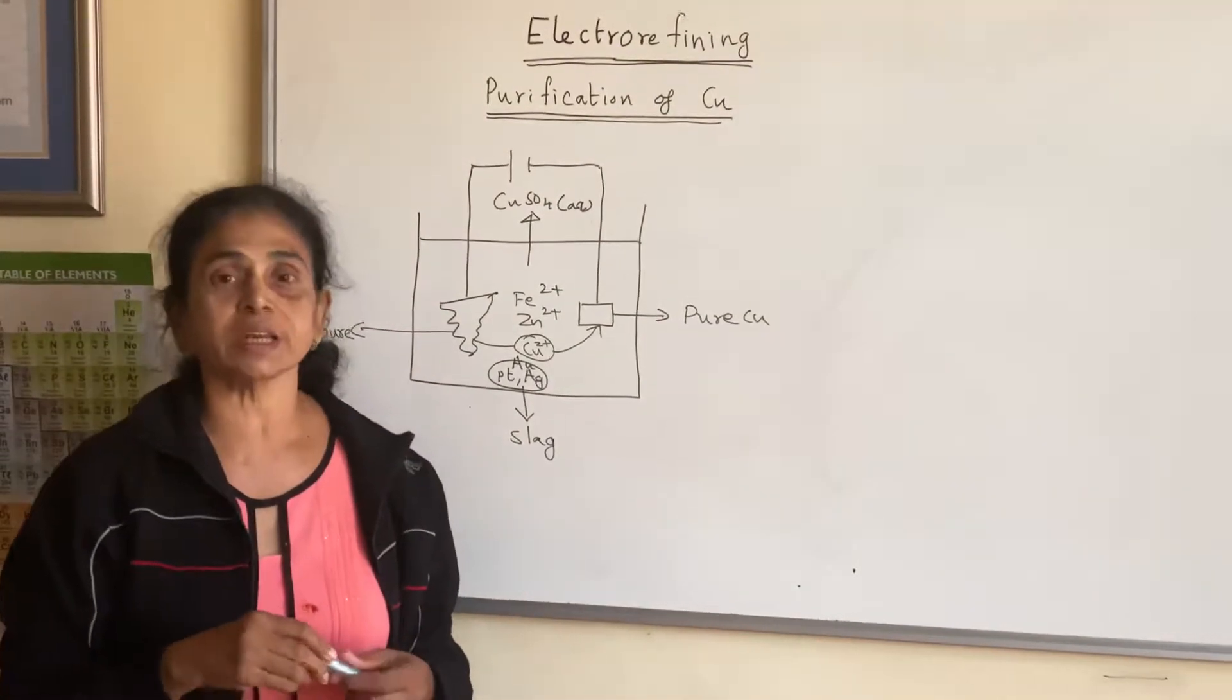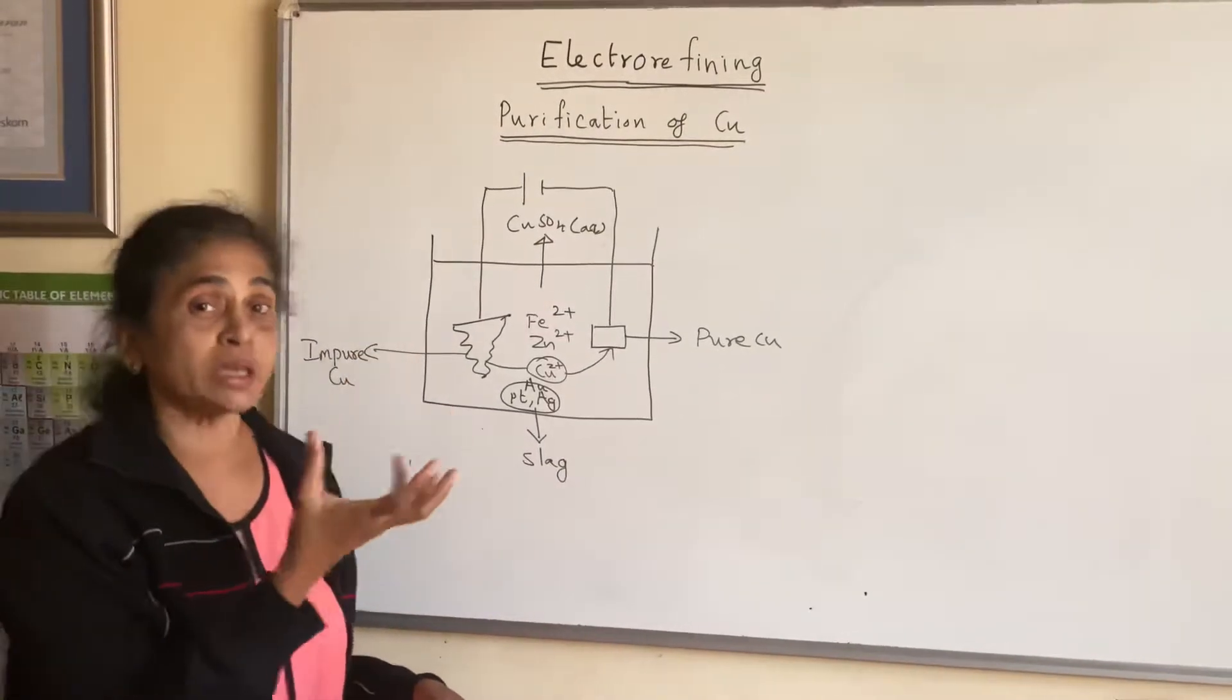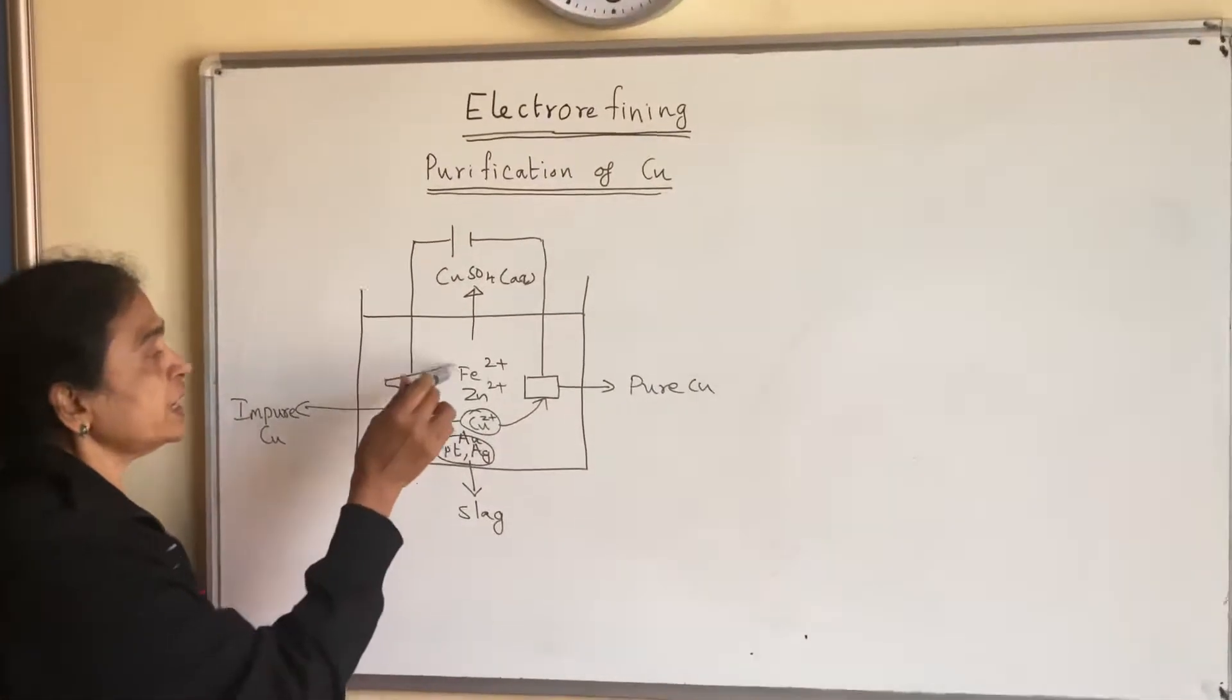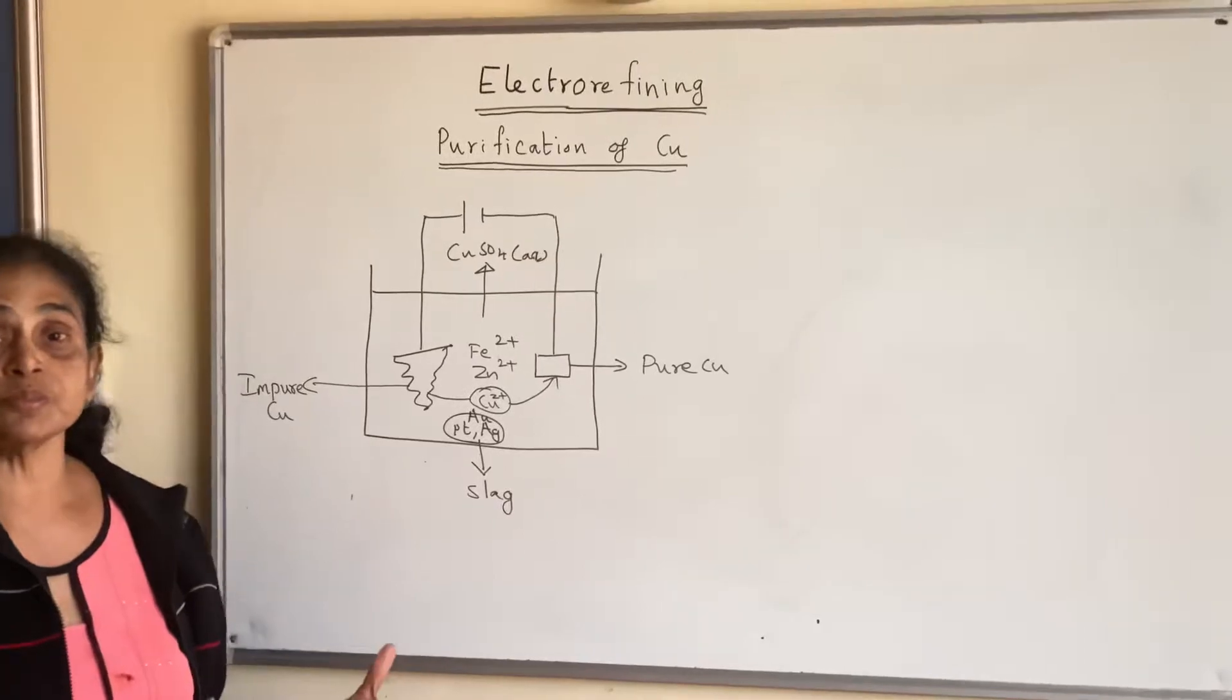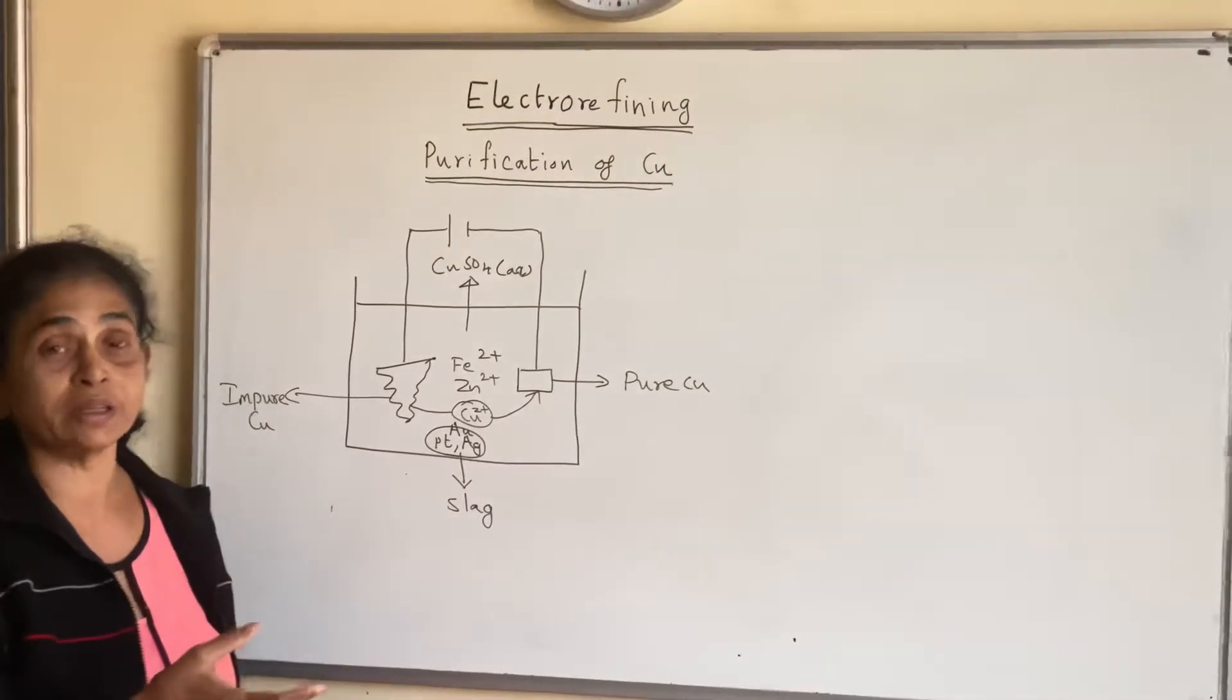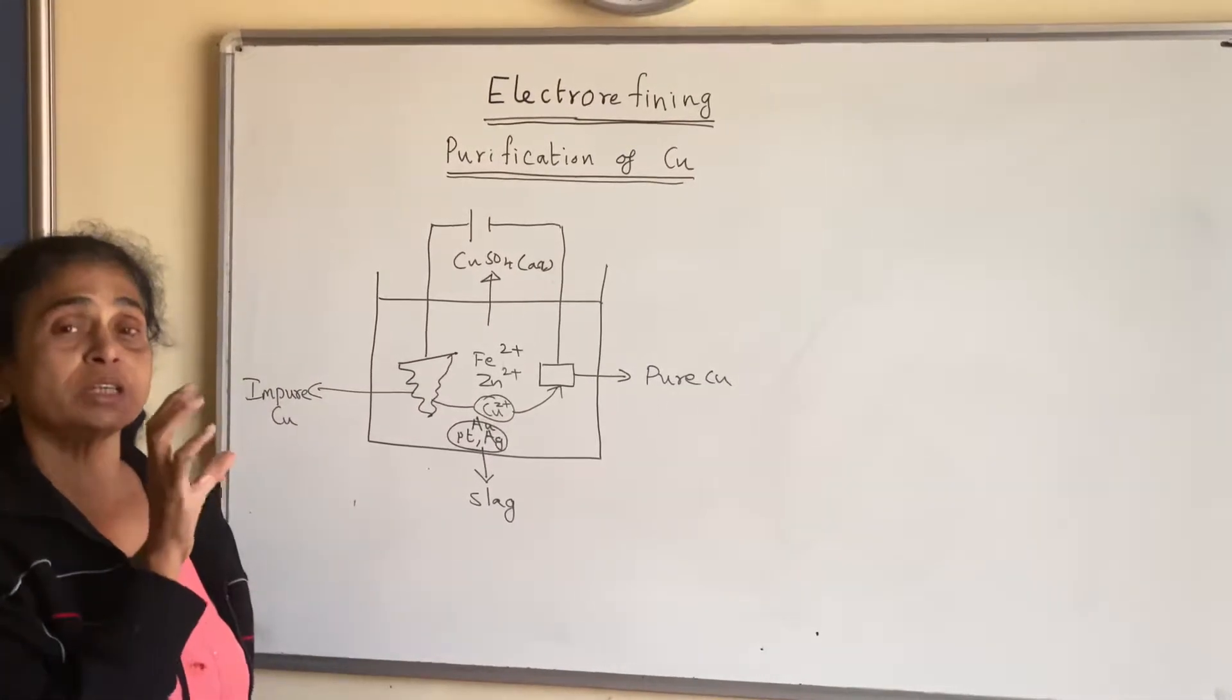What do you mean by impure copper? It has other metals along with that. Along with copper you may have iron, zinc, gold, platinum, silver in small quantities. It may be rich in copper—that's why we have mined that for copper. The majority of them are copper, but it has got other elements in small quantities.